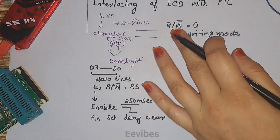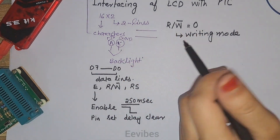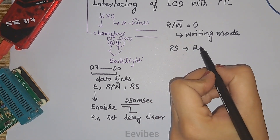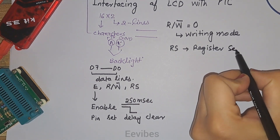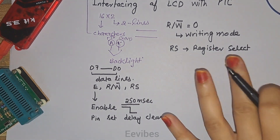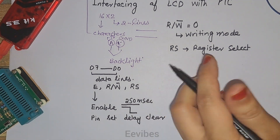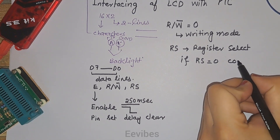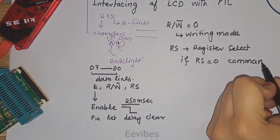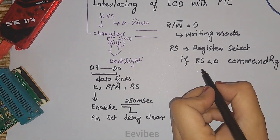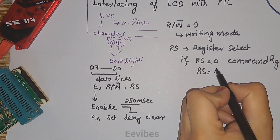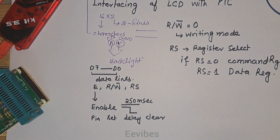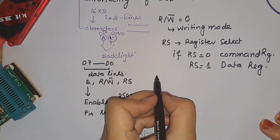Now let's discuss the RS pin, which stands for Register Select. This Register Select pin has a very important role. If RS is equal to zero, then the command register of the LCD is selected. If RS is equal to one, it means the data register is selected.